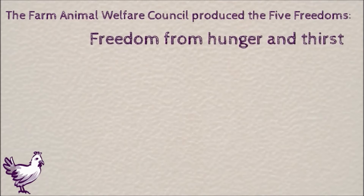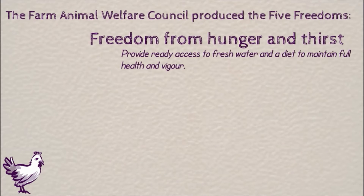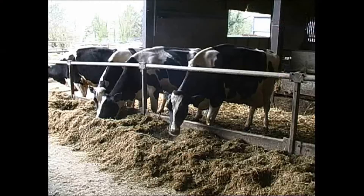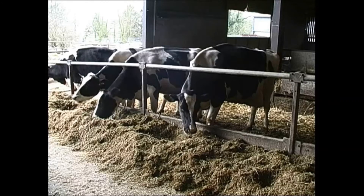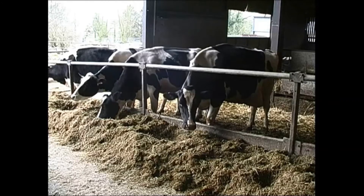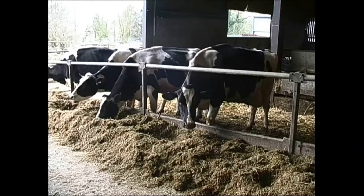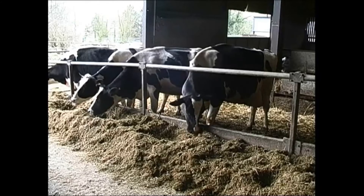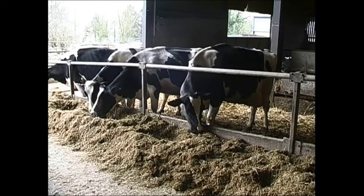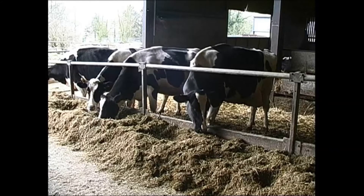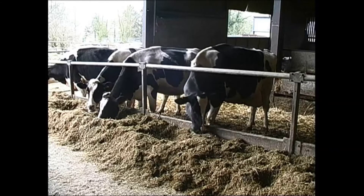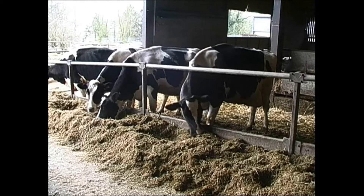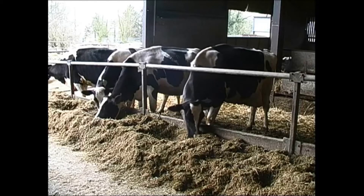The freedom from hunger and thirst includes providing adequate nutrition. For example, these cows are fed a balanced diet to allow them to produce enough milk for us but also to maintain their own health. Their diet has a good mix of nutrients, minerals and vitamins, and in the back you can see that they also have free access to a water trough.